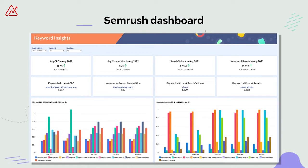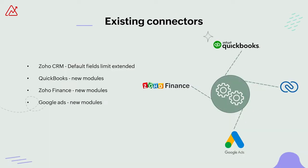Likewise, we also have reports and dashboards available for our other business app connectors, like Google Search Console and Zoho Forms. We've also brought enhancements to a couple of our existing connectors. The synchronization performance of Zoho CRM has been enhanced as we've extended the limitation for importing default fields from a module from 100 to 200. We've also added a range of new modules to QuickBooks, Zoho Finance, and Google Ad Connectors, which enables users with more data and a wider scope for preparing insightful reports.